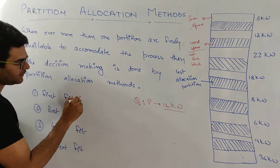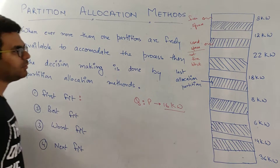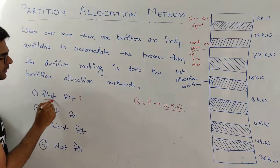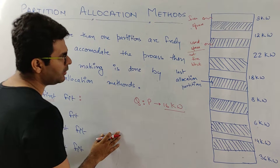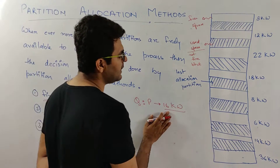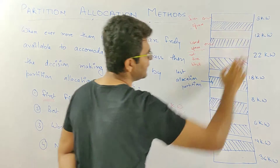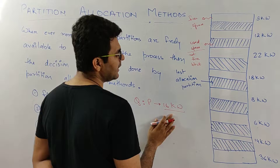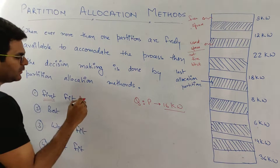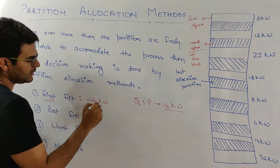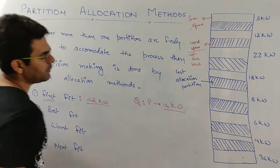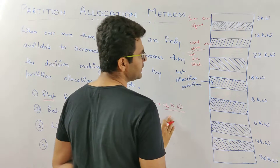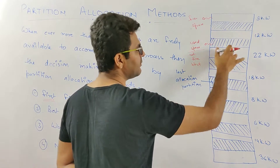The first technique is first fit. In first fit, we scan the memory from the starting and find the first appropriate block in which we can put the process. For example, if the process is 16k words and the first block is 8k words, we cannot keep it there. The next block is 12k words — again, too small. The next block is 22k words, so by first fit we place the process in that 22k word block, as it is the first block that can accommodate the process.